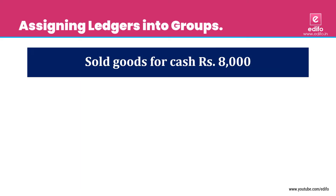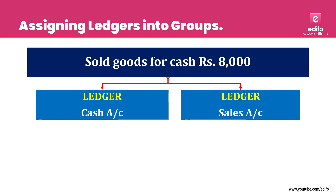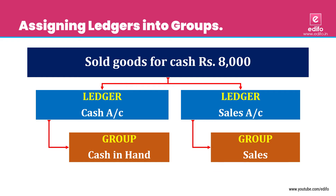Next transaction: sold goods for cash, rupees 8,000. Two aspects: the outgoing concept is goods and inflow is cash. So cash account and sales account. Cash belongs to 'Cash in Hand' and sales account belongs to the 'Sales' group.